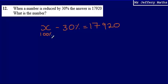So what we've got is 100% minus 30% is equal to 17,920, so what we can say is that 70% is equal to 17,920.